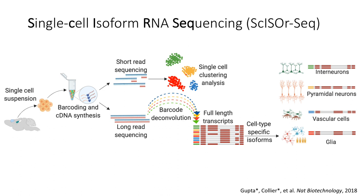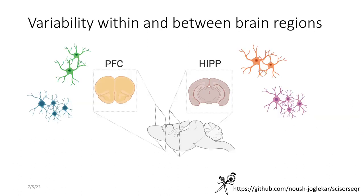So we use this to study variability of isoform expression within and between brain regions and for that I chose the prefrontal cortex and the hippocampus, two brain regions that are very important in memory and cognition, and we did this at the P7, postnatal day 7, time point.